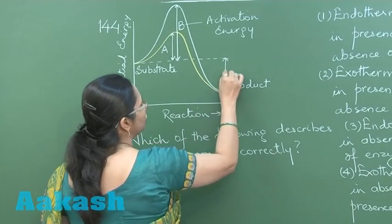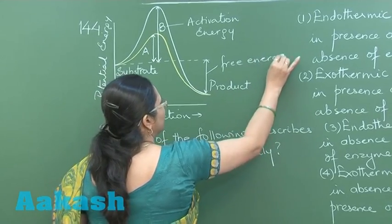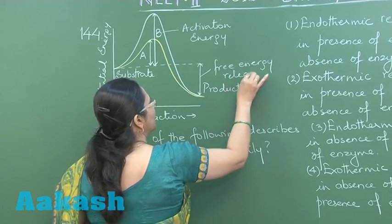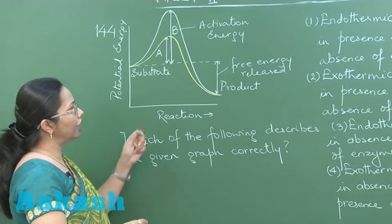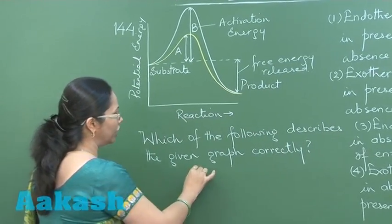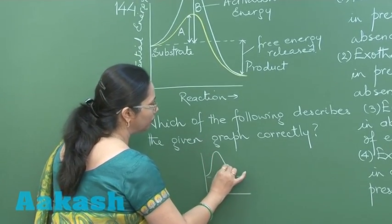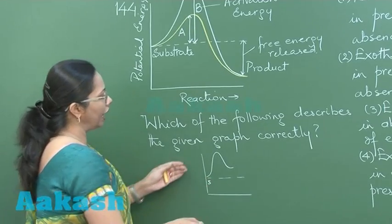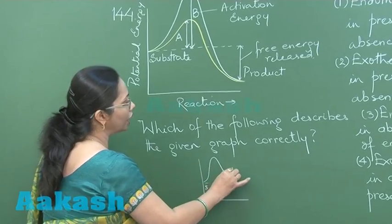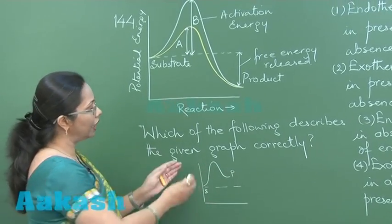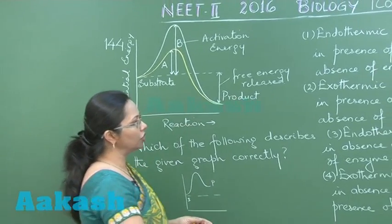This is the amount of free energy which is released. If energy is being released in the reaction, that means it's an exothermic reaction. If it was an endothermic reaction, it would be like this, where the substrate is at lower energy state while the product is at higher energy state, meaning it has absorbed energy.